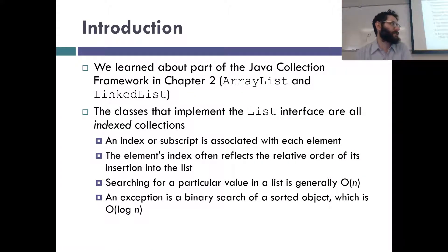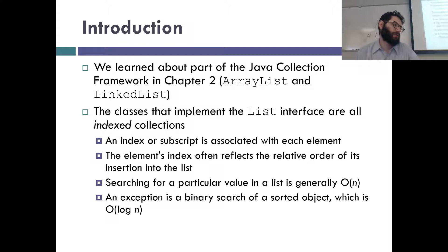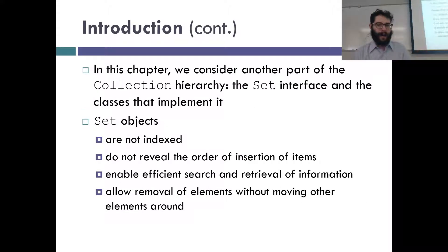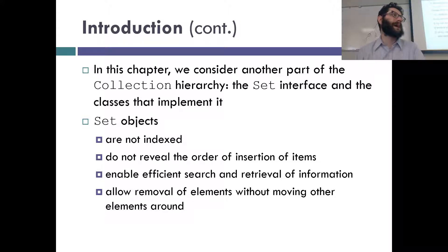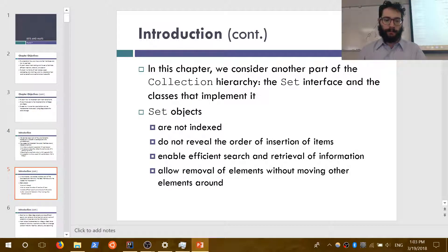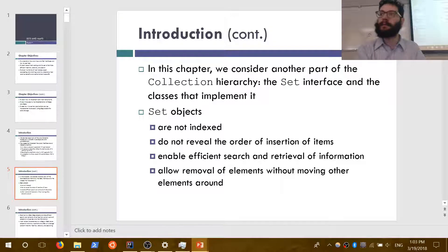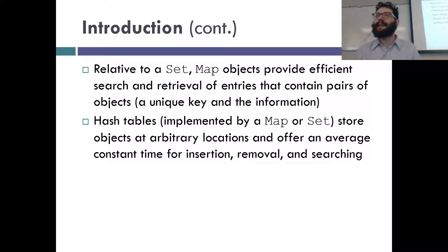So, lists are indexed — things have an order, you can iterate through them, and searching takes O(N) time, or O(log N) if sorted. But sets are even better — they take constant time, have no indices, and don't care about the order items are inserted. You can remove elements without shifting. If you're taking the basic CS math concepts class, you probably already know what a mathematical set is.